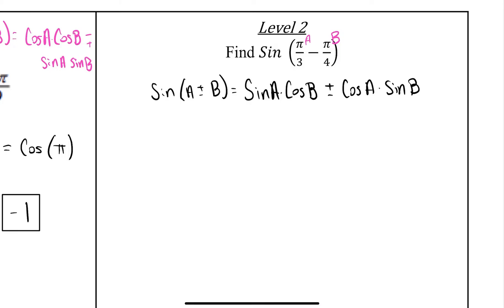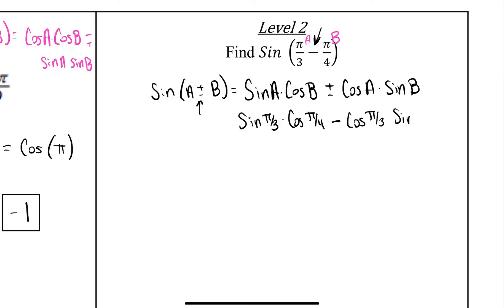Anywhere we see an A we put π/3, and anywhere we see a B we put π/4. So we end up with sine of π/3 times cosine of π/4. Since it was minus, we keep the minus operation. Then we flip-flop it and do cosine of π/3 and sine of π/4. I'm going to start with the π/4 values. We know that π/4 is √2/2 for both sine and cosine, so we put √2/2 for both of those.